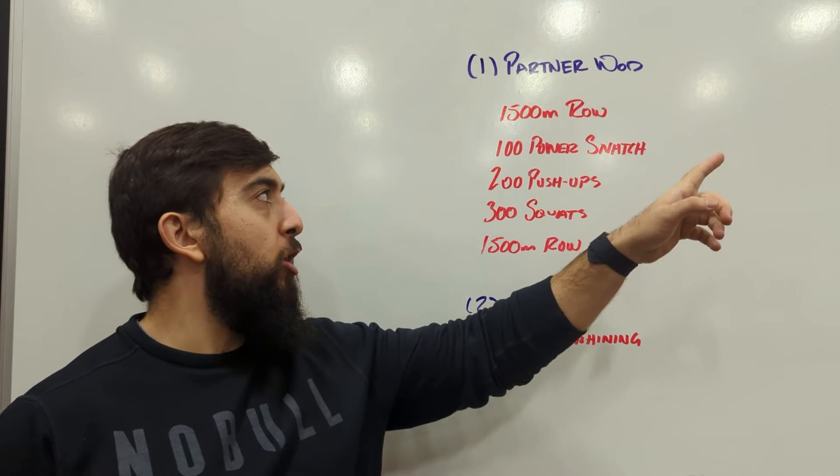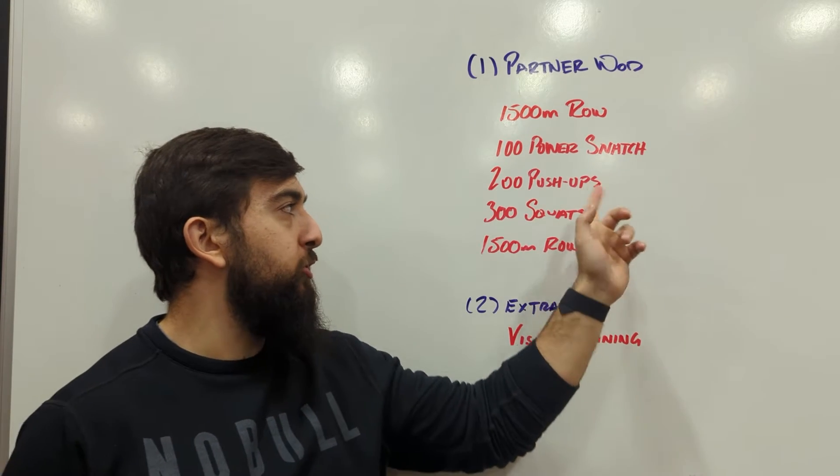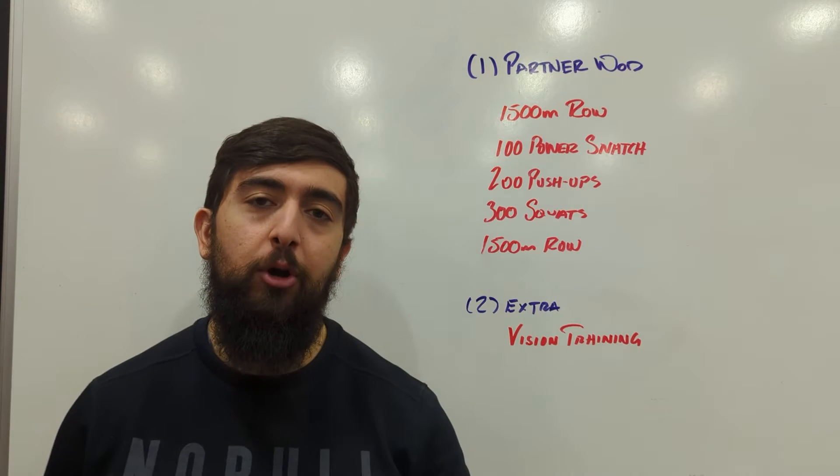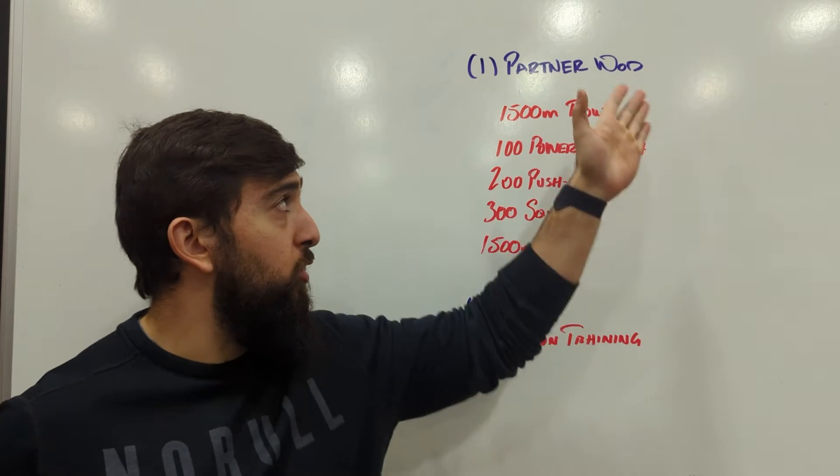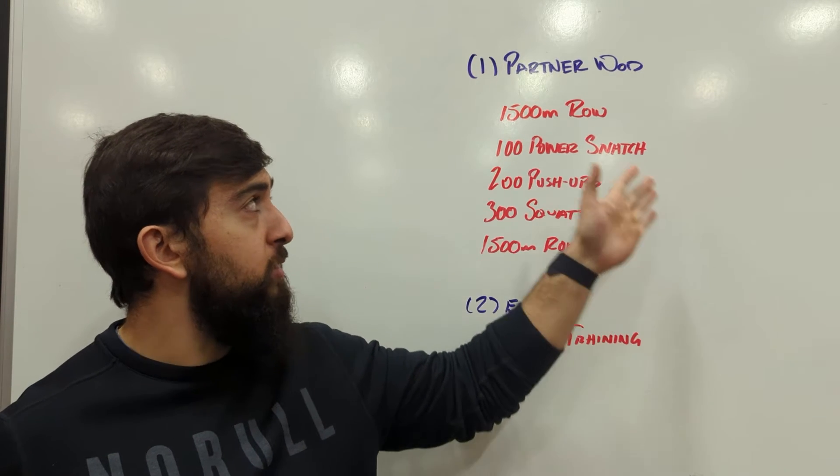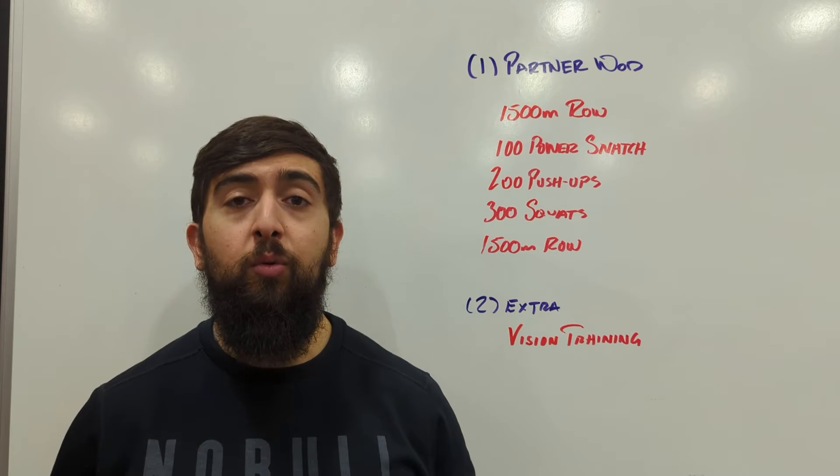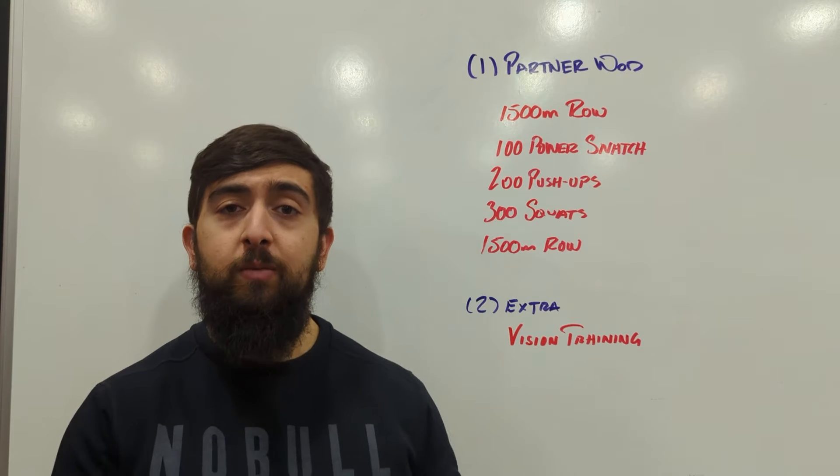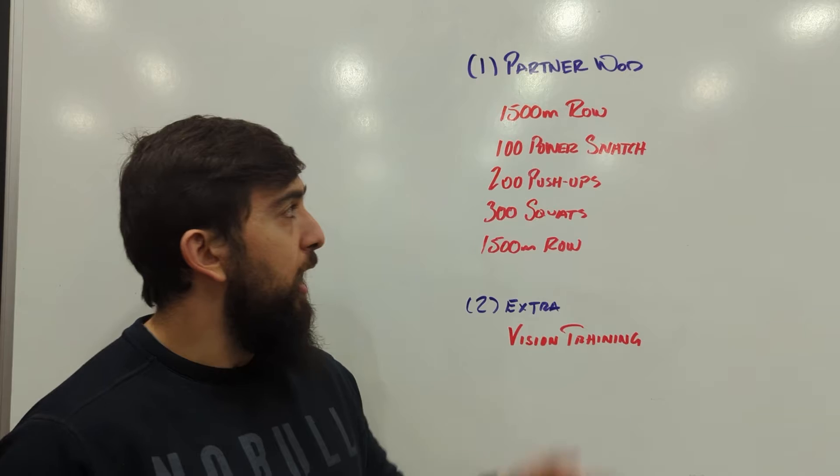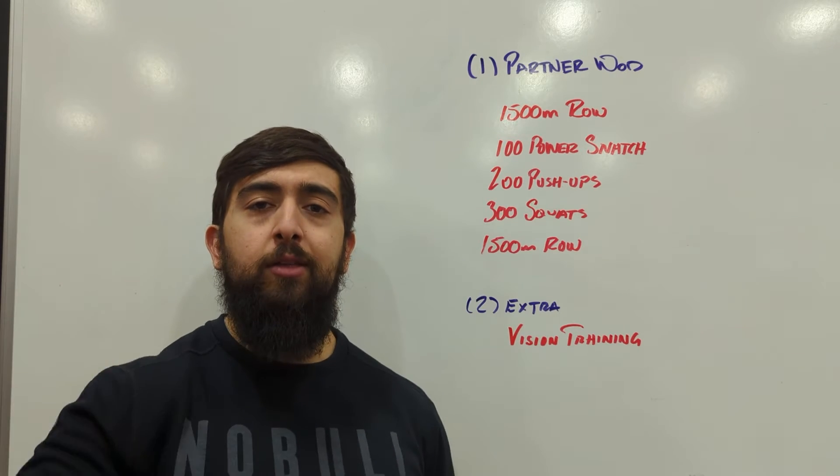Doing 1,500 meter row, 100 power snatches, 200 push-ups, 300 squats, 1,500 meter row. So in partners, you're going to accumulate those numbers. You can break it up however you want. One partner works at a time if you're doing it in partners. If you're doing it individual, just cut everything in half.